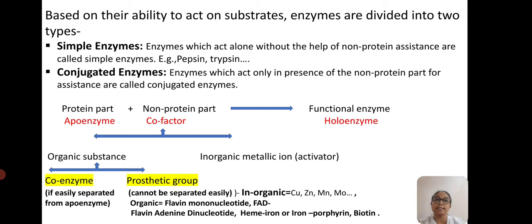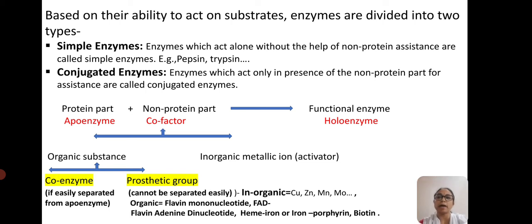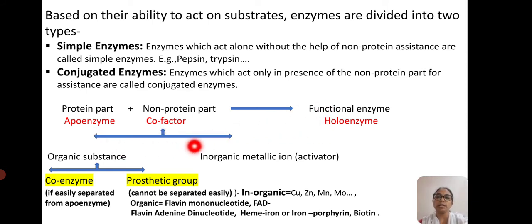Conjugated enzymes act only in the presence of the non-protein part, but the non-protein part alone cannot take up the catalytic function. The protein part is called the apoenzyme. The non-protein part is the cofactor and it is of two types. If an organic substance acts as the cofactor, then we call it a coenzyme.